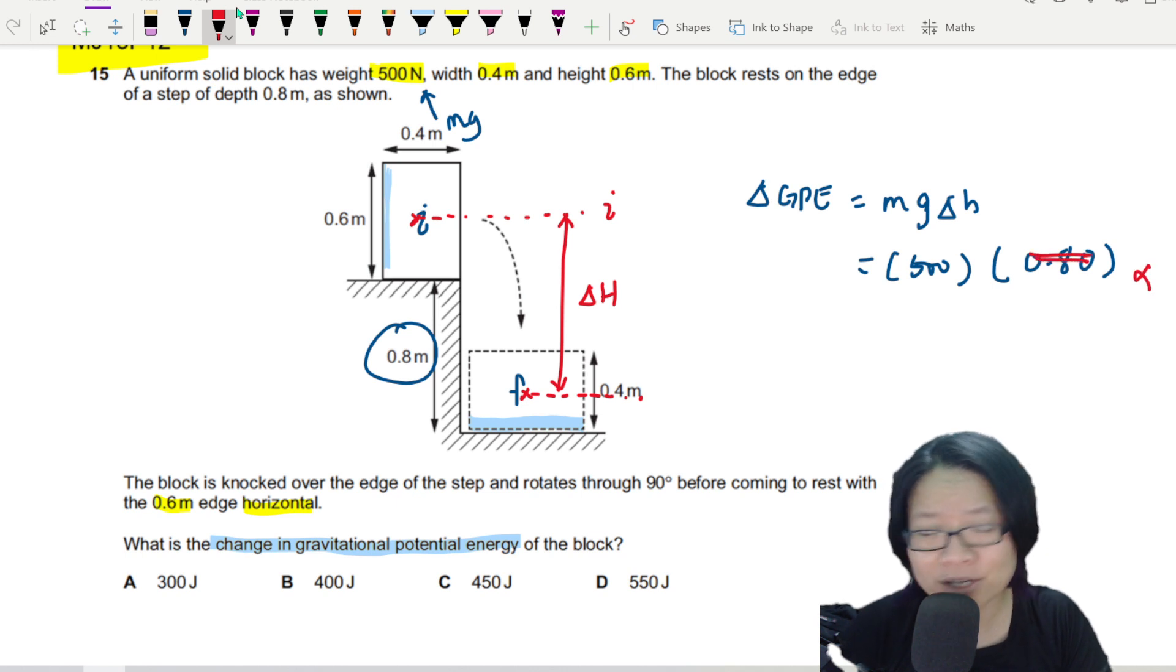Let's try to find delta h. We know that the height from here to here is 0.3, half of the 0.6. And we know the height from here to here is half of 0.4, so here to here would be 0.2 meter.